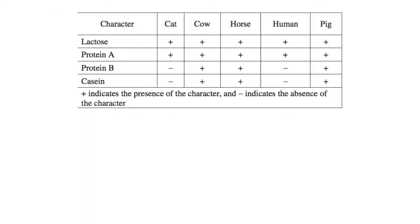Looking at the chart, we see that the cow, the horse, and the pig all have lactose and all three proteins — they have all the characters. But the human and the cat only have lactose and protein A. When species have similar proteins within a substance they produce such as milk, that means they are more likely to be closely related. So the cat and the human are probably more closely related to each other than to the cow, horse, and pig, and the cow, horse, and pig are more closely related to each other than to the cat or human.